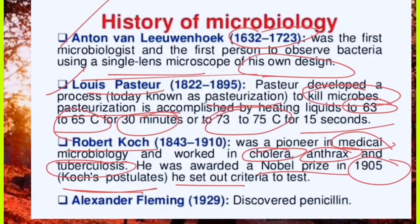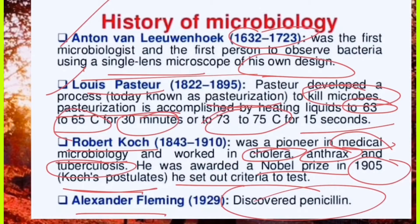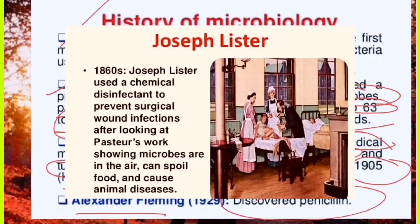Koch developed a theorem called Koch's Postulates, which we will need to understand later. Another important scientist is Alexander Fleming, who discovered the first medicine — penicillin. You need to understand microbiology history because if you understand the history of microorganisms and microbes, you become more clear in this field.